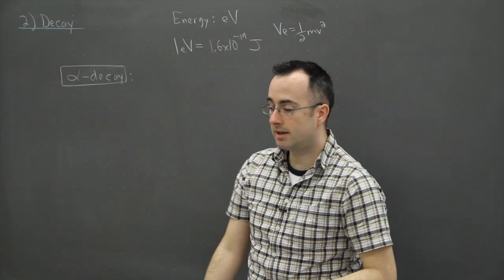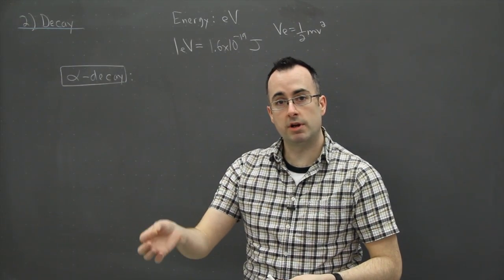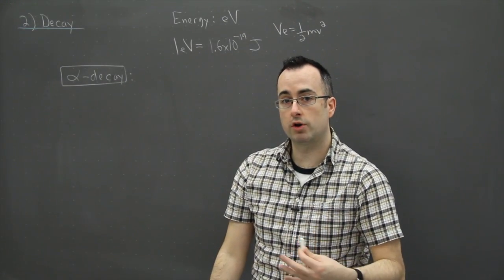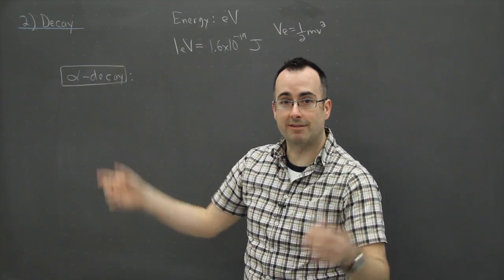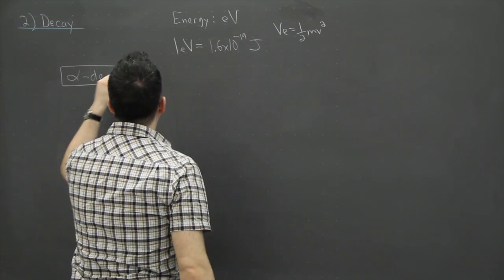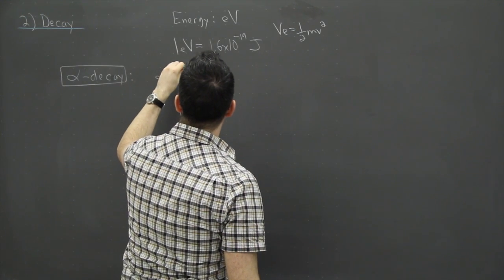They knew that this element was, you know, changing from one thing to another. But they didn't know what that particle was that was missing. So they call them alpha particles at first. But now we know. Now we know that an alpha particle is just a helium-4.